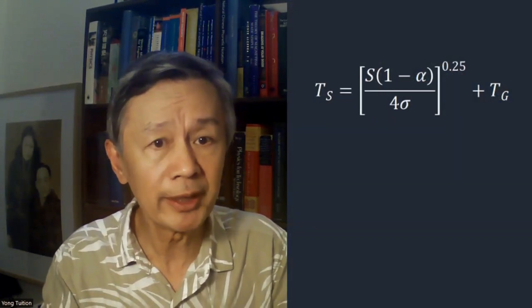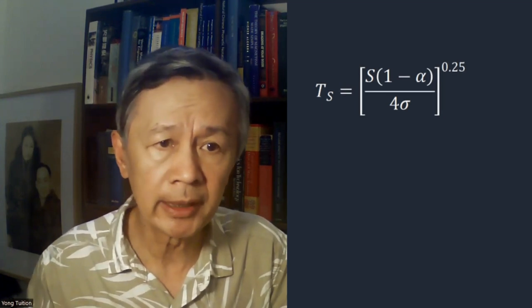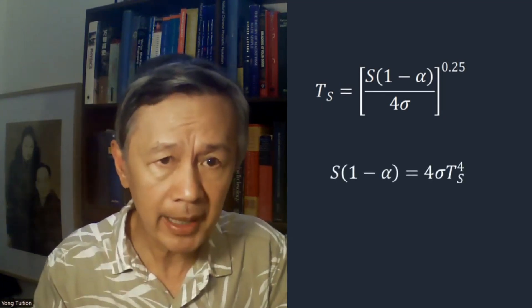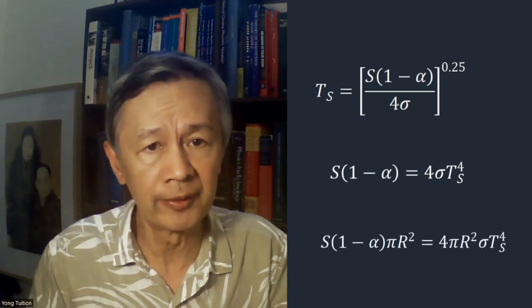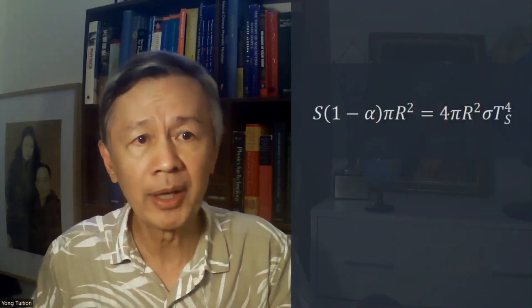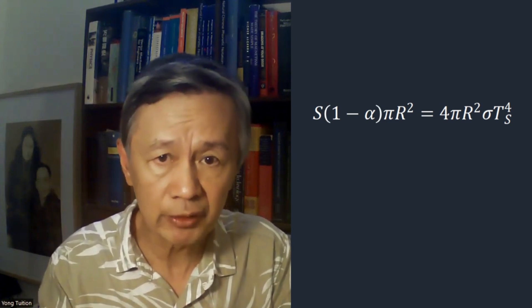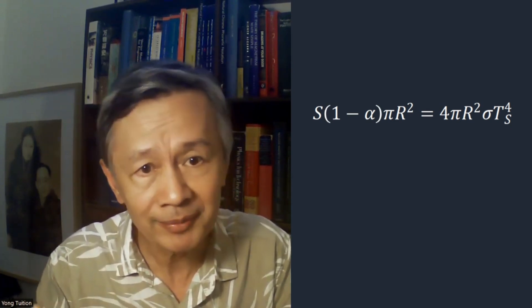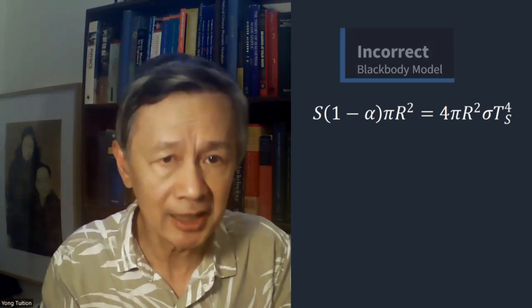As I have discussed before, this equation is conceptually wrong. To understand this mistake, let's omit the so-called greenhouse effect term first, and then rewrite the formula algebraically. Then multiply pi r squared on both sides, where r is the radius of the Earth. Notice that pi r squared represents the area of the cross-section of the Earth, and 4 pi r squared is the total surface area of the Earth. Because power equals intensity multiplied by area, this equation tells us that after reflection, the effective solar radiation power is equal to the thermal radiation power by a spherical black body, since the emissivity here is unity. However, this equation is incorrect.